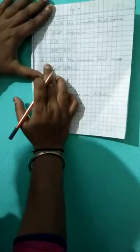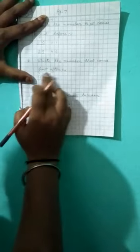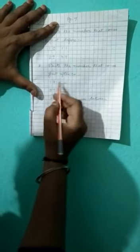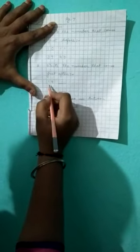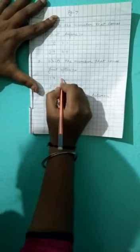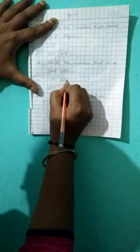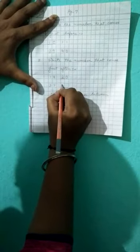Question number 2, write the number that comes just after. So again I'm telling you between the question and answer, one box gap you give. Here you see one box gap I have given. So after 19, what comes after 19? Answer is 20. What comes after 37? Answer is 38.